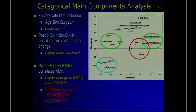The blue circle correlates with the change in astigmatism — meaning the higher the astigmatism preoperatively, the better the improvement post-op. In green we have Kmax, one of the most important factors: Kmax correlates well with higher change in Kmax and sphere, but inversely with uncorrected and best corrected visual acuity improvement. Very high curvature cases tend to improve less from the visual acuity point of view.